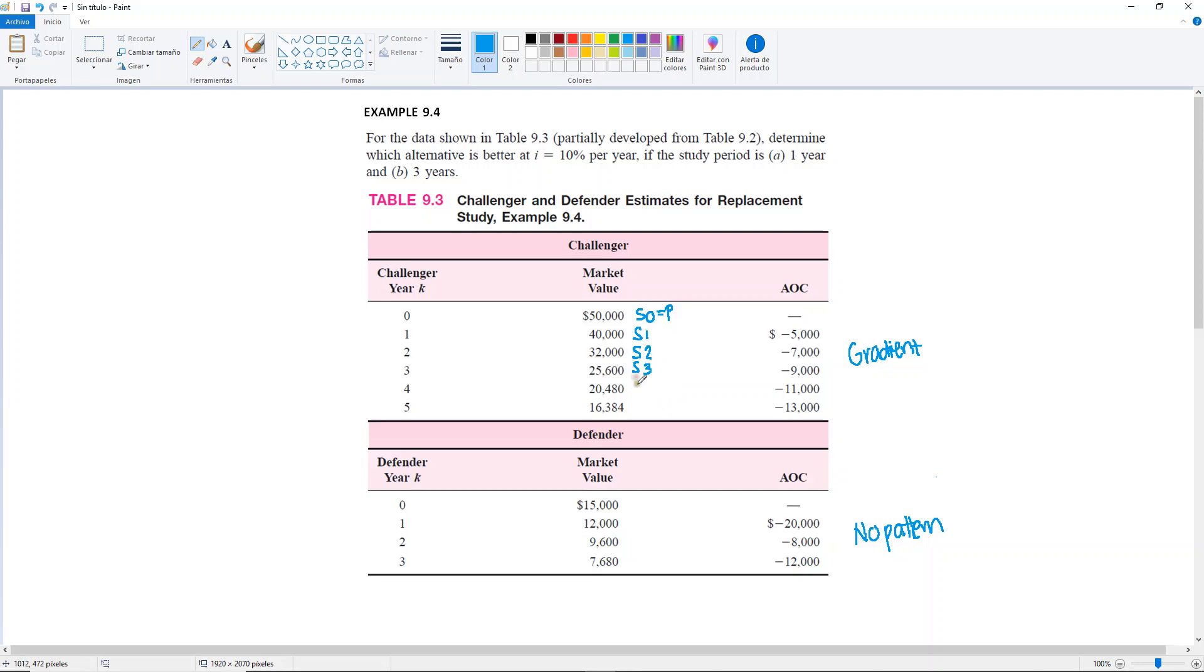S2, S3, S4, and S5. Same thing here. Your S0 will be your P, and then the rest are the salvage values for the individual years.